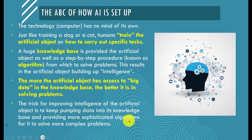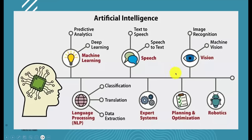The trick for improving intelligence in any artificial object is to keep pumping data into its knowledge base and keep providing more sophisticated step-by-step processes for solving the problem. All of these — machine learning, text-to-speech, and the rest — are built this way. Don't worry too much about the terminology; in two or three more lessons, we'll get into the practical side of how this works.